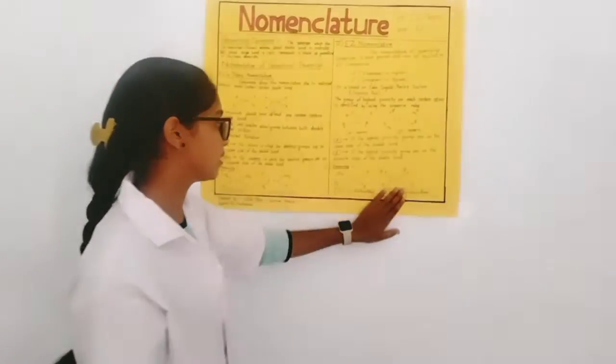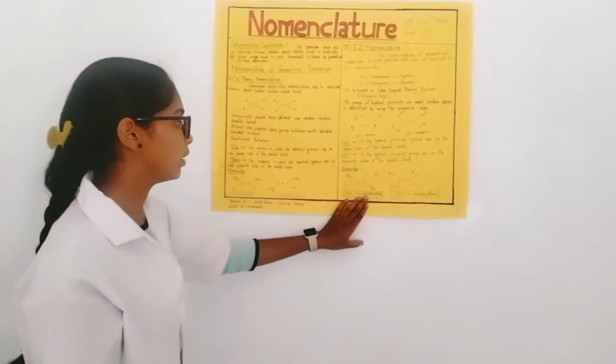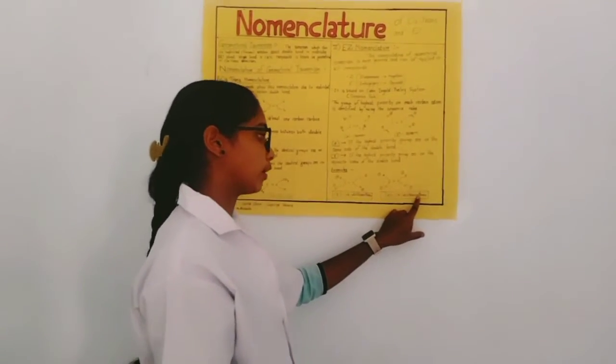The examples of that is the E-1-chloro-2-fluoroethane and Z-1-chloro-2-fluoroethane.